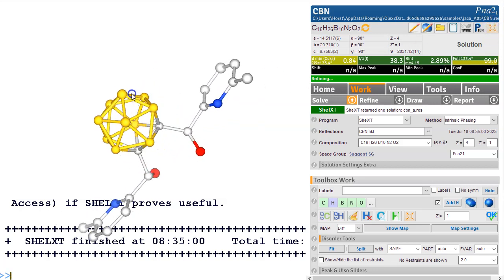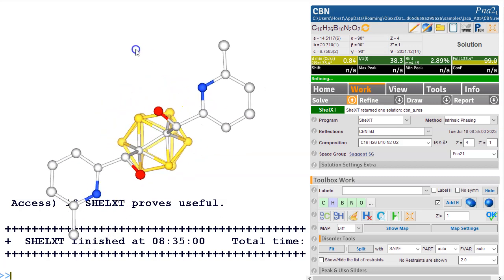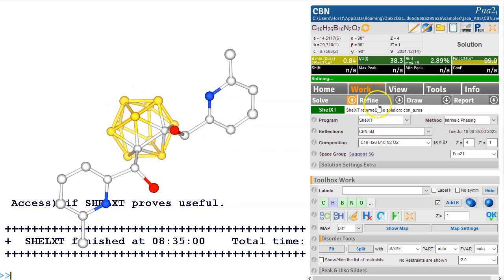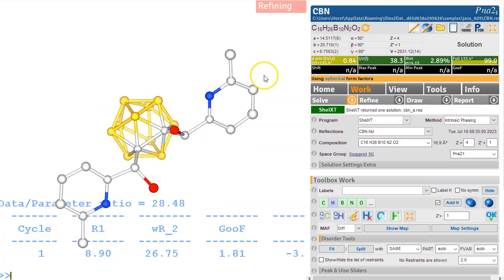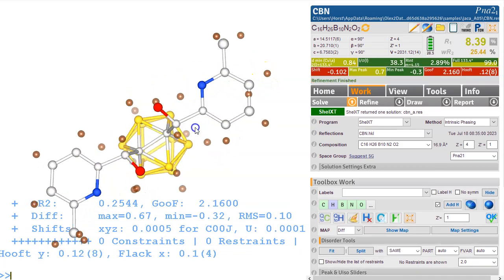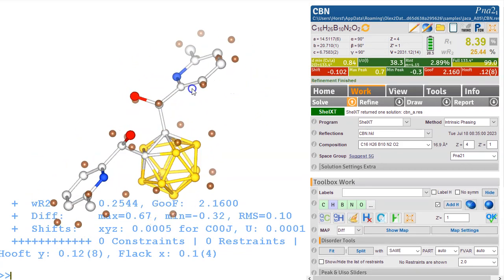So this looks like it's all done. We have got a boron cage here, we've got the carbons identified. And let's refine this and see what happens. Okay, so all the hydrogen atoms are quite clearly visible.